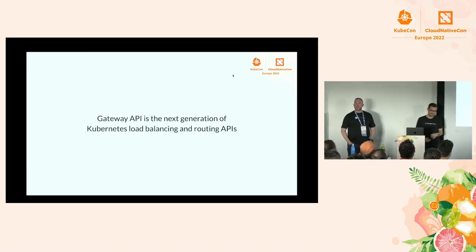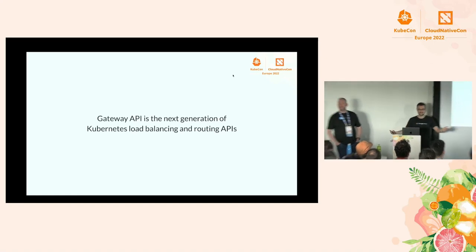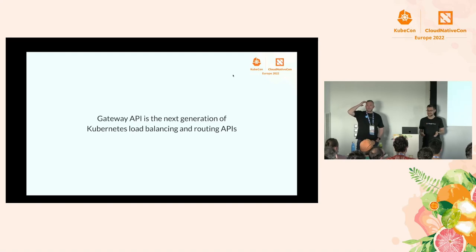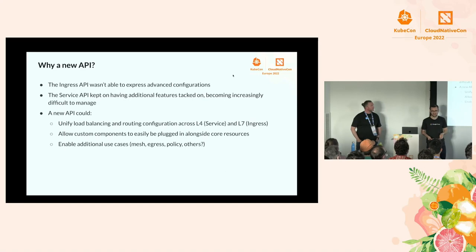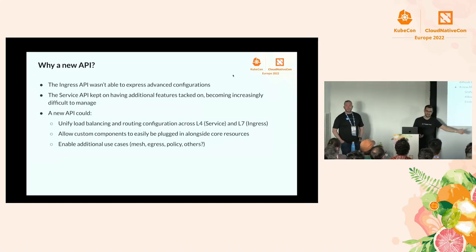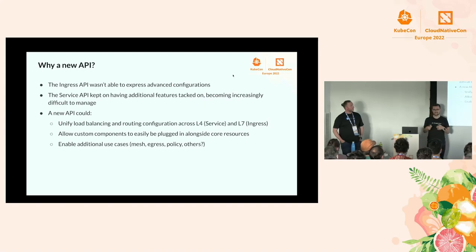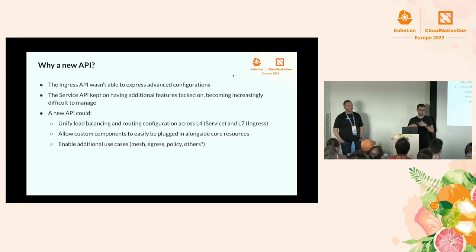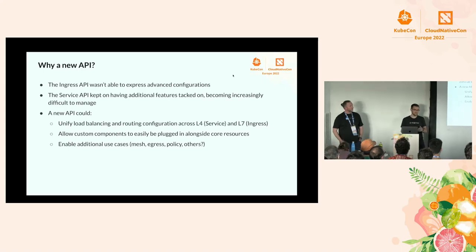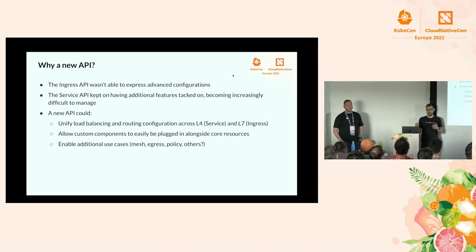For those of you who haven't tried it out yet, you may be wondering: what is this thing? I look at it as the next generation of Kubernetes load balancing and routing APIs. Why build a new API? We already have ingress and service APIs. The ingress API simply wasn't able to express advanced configurations that so many people wanted, leading to lots of custom annotations. We wanted to provide a better API in Kubernetes that didn't require all those annotations.